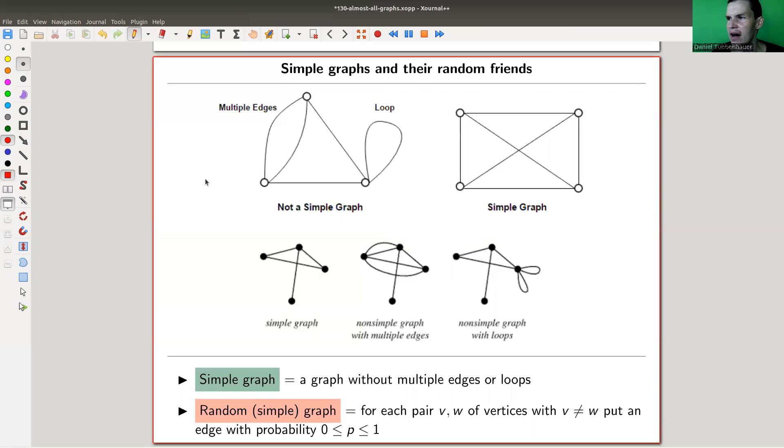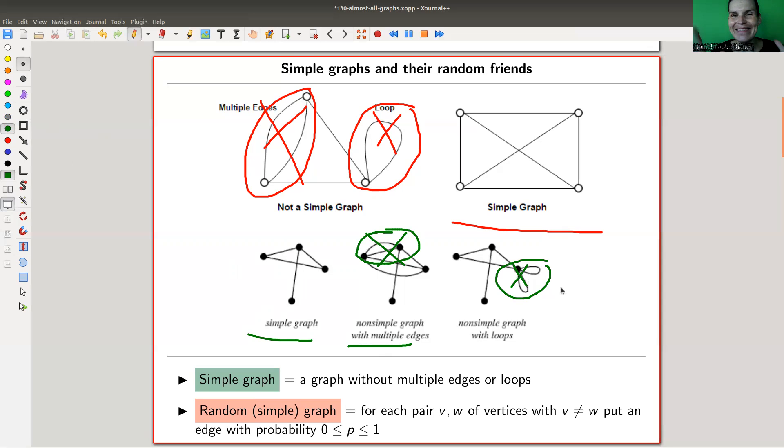To set up notation, I only want simple graphs in this video. This means I don't allow parallel edges or loops. That's for convenience - these things are easier to study. Simple graphs are those without parallel edges or loops. Just a bunch of vertices and edges, but the edges are not parallel and not loops. I'll just call that a graph.